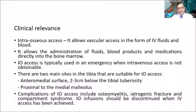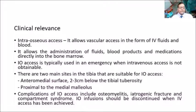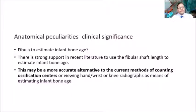Intraosseous access is sometimes needed when intravenous access cannot be obtained. You can administer IV fluids, blood products, or medication directly into the bone marrow. This is used in dire emergencies when IV access is not obtainable. There are two main sites: the anteromedial surface below the tibial tuberosity and proximal to the medial malleolus. Complications include osteomyelitis, iatrogenic fracture, and if fluid enters muscle compartments, compartment syndrome can occur.